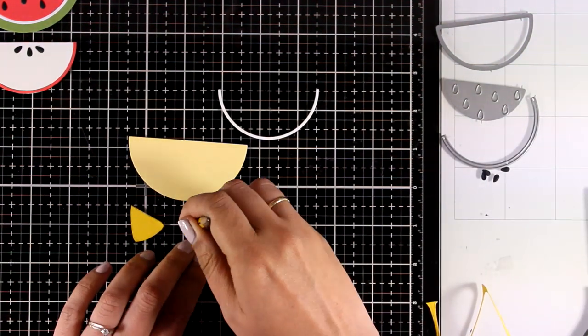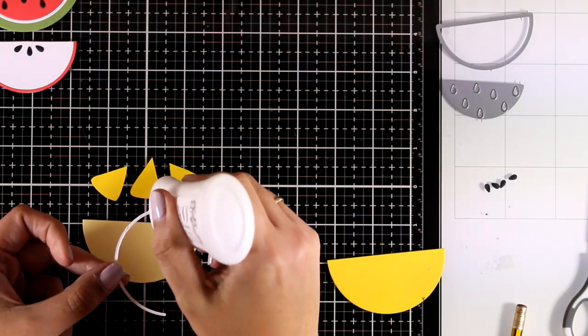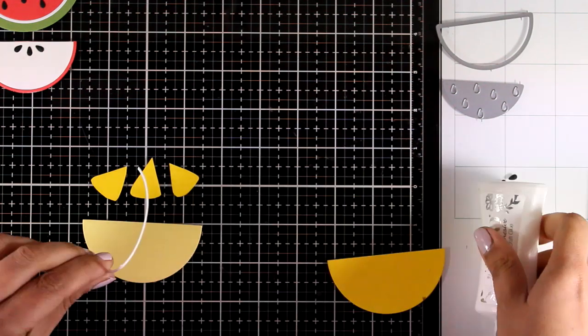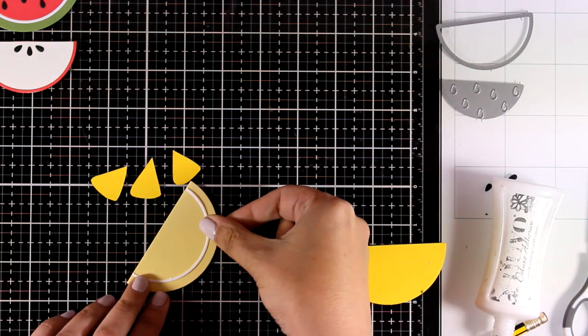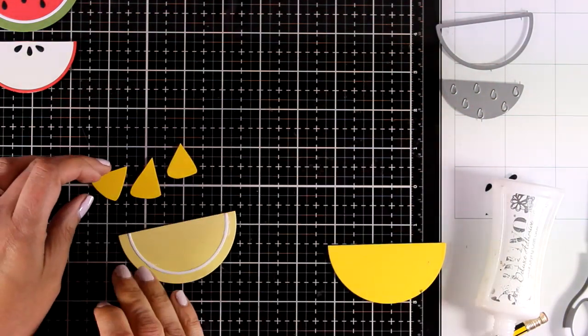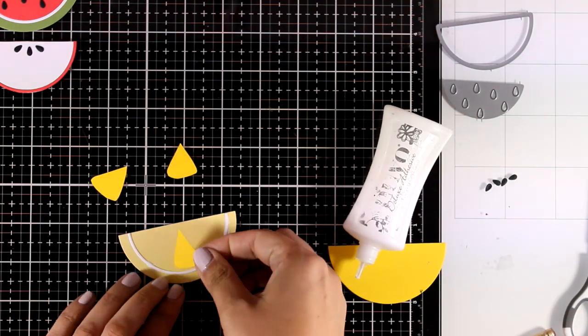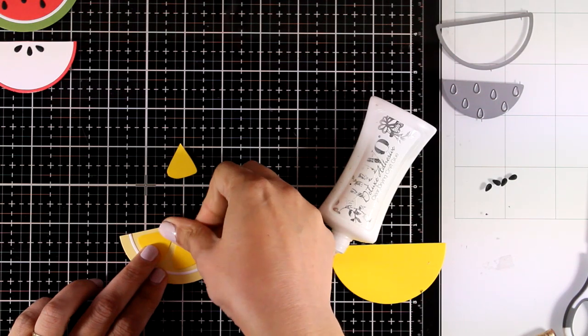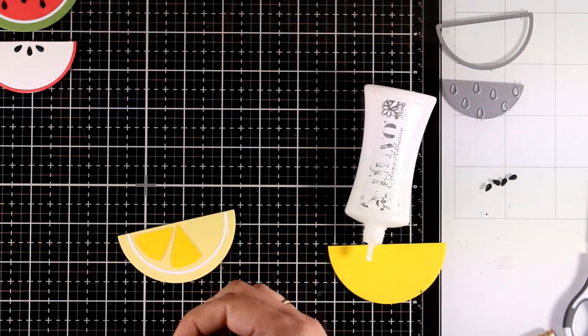Don't forget to erase all the pencil lines. I'm using my Nuvo Deluxe at the back of all those pieces to put together my lemon slice. You can use the same technique to create an orange slice or a lime slice, just use different colored cardstocks.